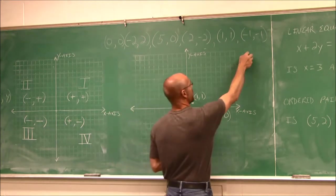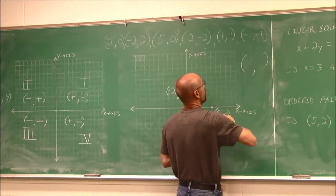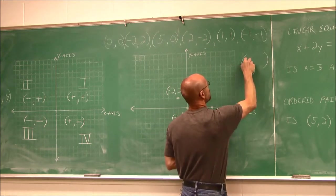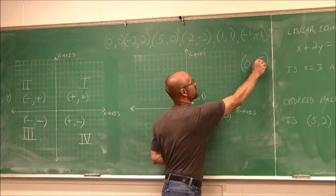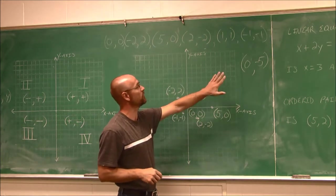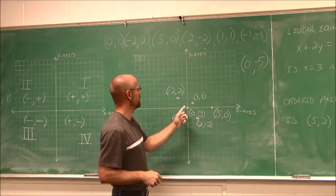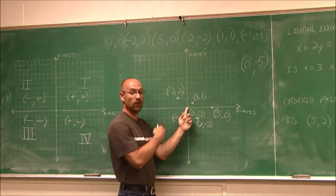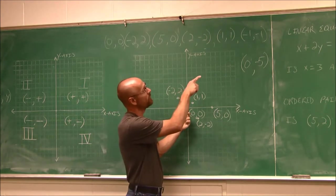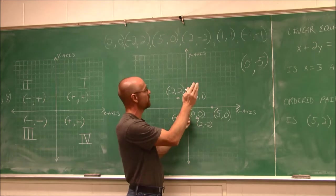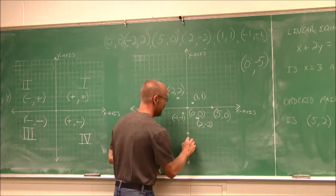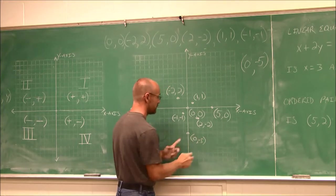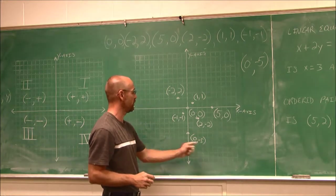Let's do one more: (0, −5). x is 0, so I don't go left or right, but I go down 5 because my y value is −5: 1, 2, 3, 4, 5. This point right here is the ordered pair (0, −5) — 0 in the x direction but down 5 in the y.